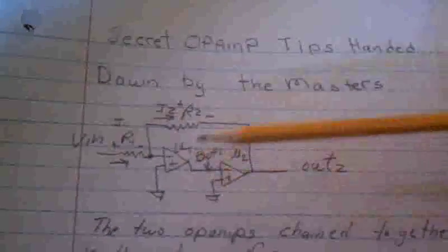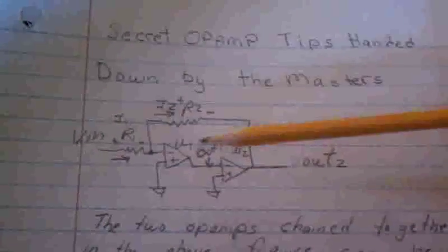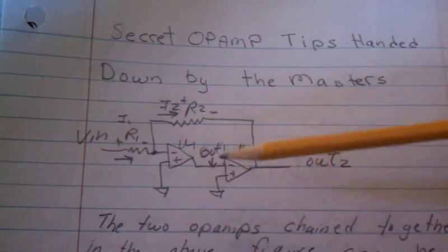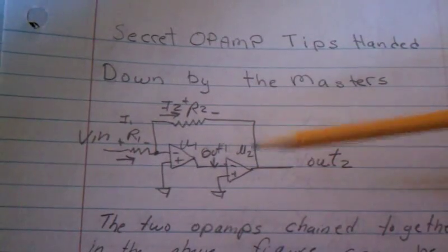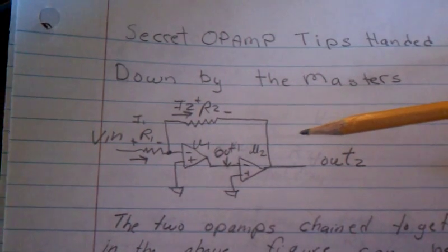Here's some secret op-amp tips handed down by the masters. A lot of you have asked questions about this particular op-amp configuration where we've chained two op-amps together, and some of you have rightly pointed out that the feedback loop goes around these two op-amps.